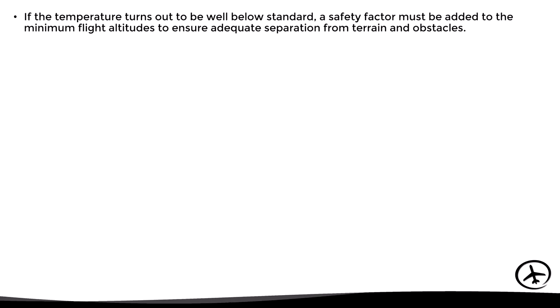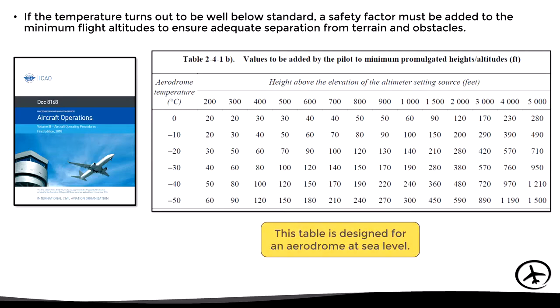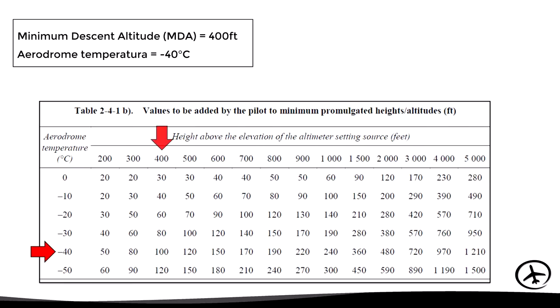However, if the temperature turns out to be well below standard, a safety factor must be added to the minimum flight altitudes to ensure adequate separation from terrain and obstacles. The correction factors to be used are published in ICAO document 8168 and are provided by means of a table. These values are established based on an aerodrome at sea level but can be used for other elevations. For example, if the minimum descent altitude (MDA) of a particular instrument approach procedure is 400 feet and the temperature is −40°C, using the table we can see that the correction to be added is 100 feet, obtaining a corrected MDA of 500 feet.